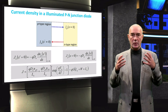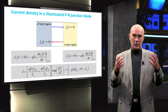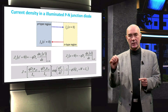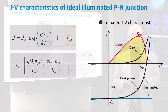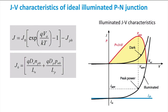For the total current density, we get this equation. The net current density of the illuminated P-N junction diode is the sum of the dark current density and the photocurrent density.